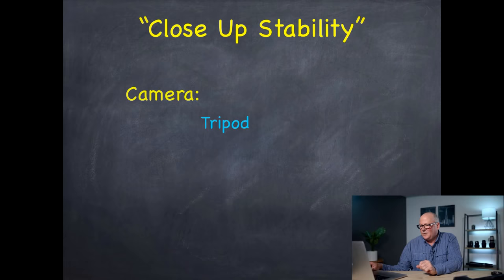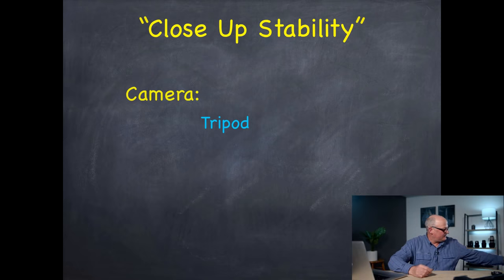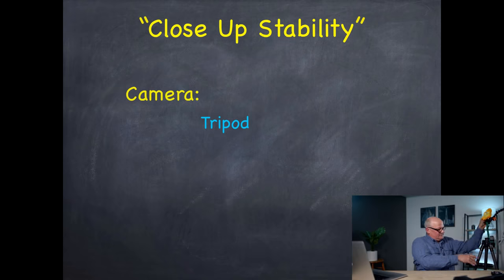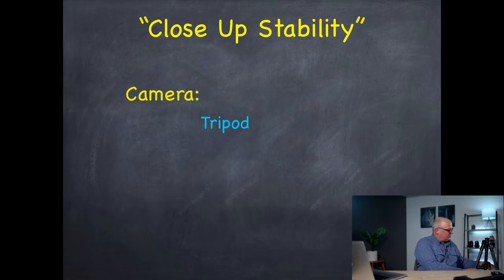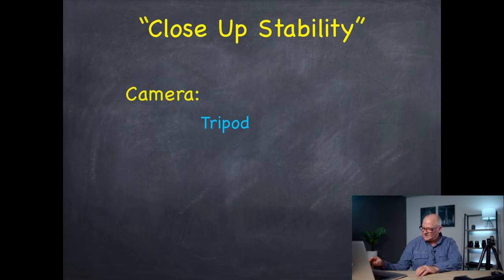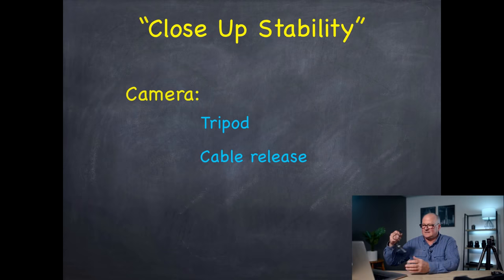Let's briefly talk about close-up stability in terms of the camera. One thing that will help us get things really stable is a good tripod. The key thing to consider when choosing a tripod is to make sure it goes all the way down to the ground — that might be really important when shooting macro. Another thing to help with stability is a cable release, which plugs into your camera so you can release the shutter without pushing on the camera.